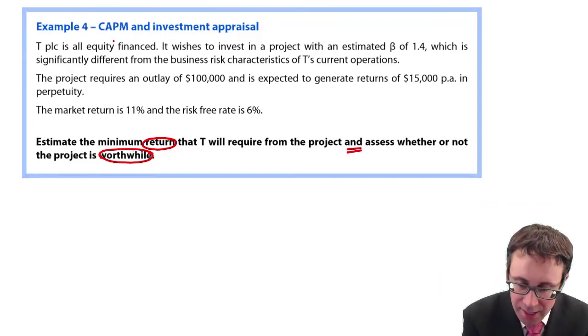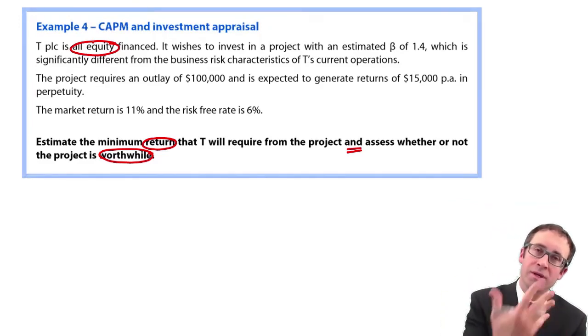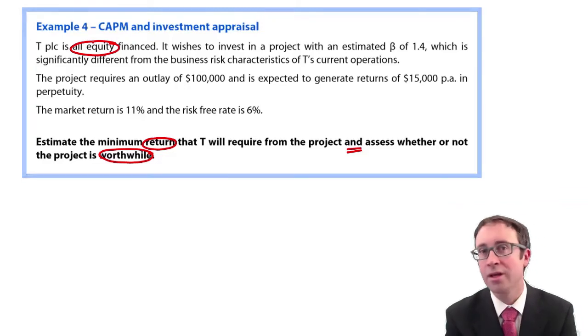So what have we got? It says T PLC is all equity finance. So there is no finance risk within this business. Therefore, all the risk is business risk. And therefore we can use CAPM.